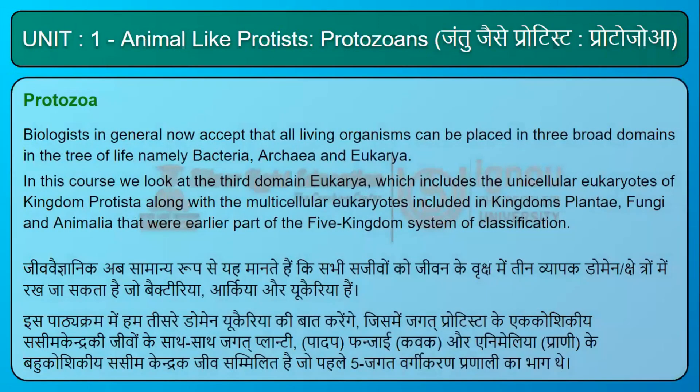Biologists now generally accept that all living organisms can be placed in three broad domains in the tree of life: namely bacteria, archaea, and eukarya. In this course we look at the third domain, eukarya, which includes the unicellular eukaryotes of kingdom Protista along with the multicellular eukaryotes included in kingdoms Plantae, Fungi, and Animalia, that were earlier part of the Five Kingdoms system of classification.